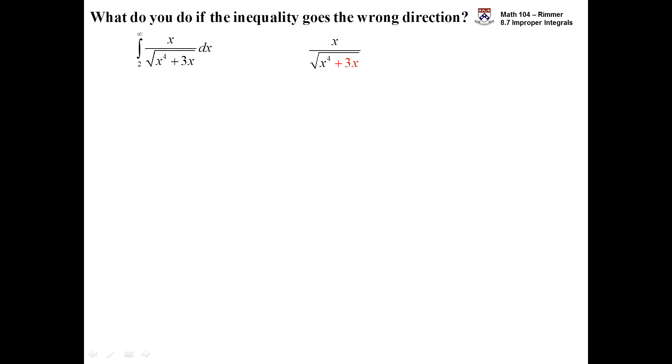Here's an example of such a case: x over the root of x to the fourth plus 3x. We're looking for the area under this curve from 2 to infinity. As x gets big, the plus 3x ends up not playing a role — what dominates is x to the fourth, so much so that we can drop off the 3x term.